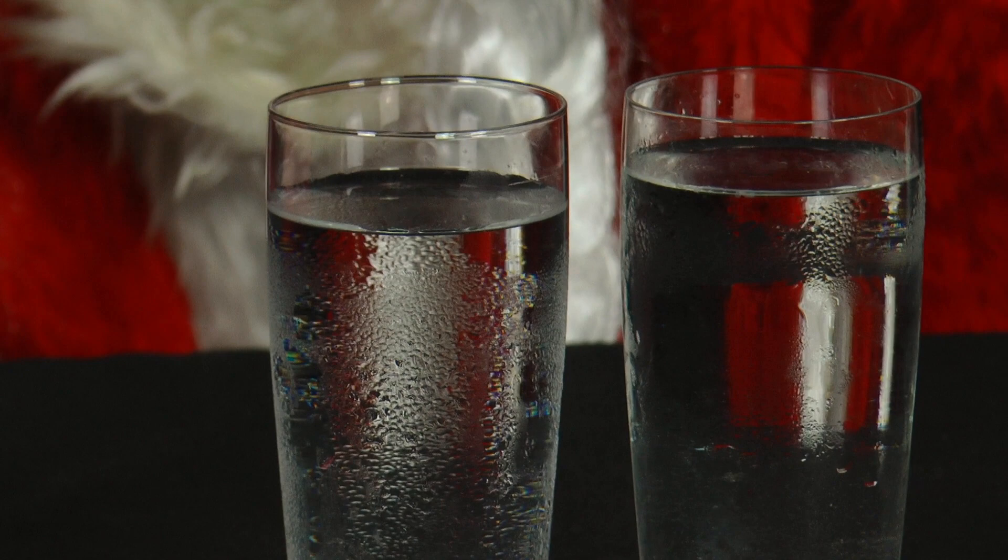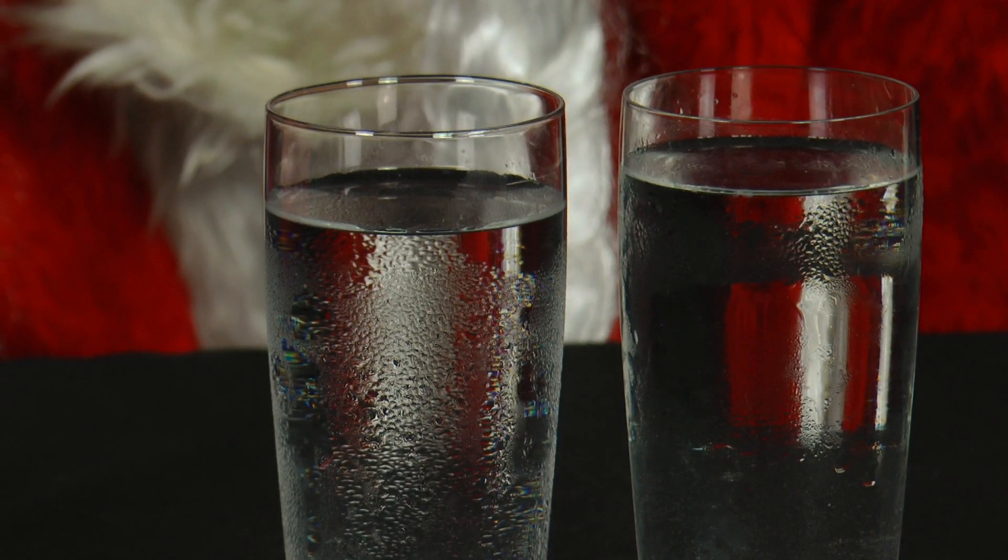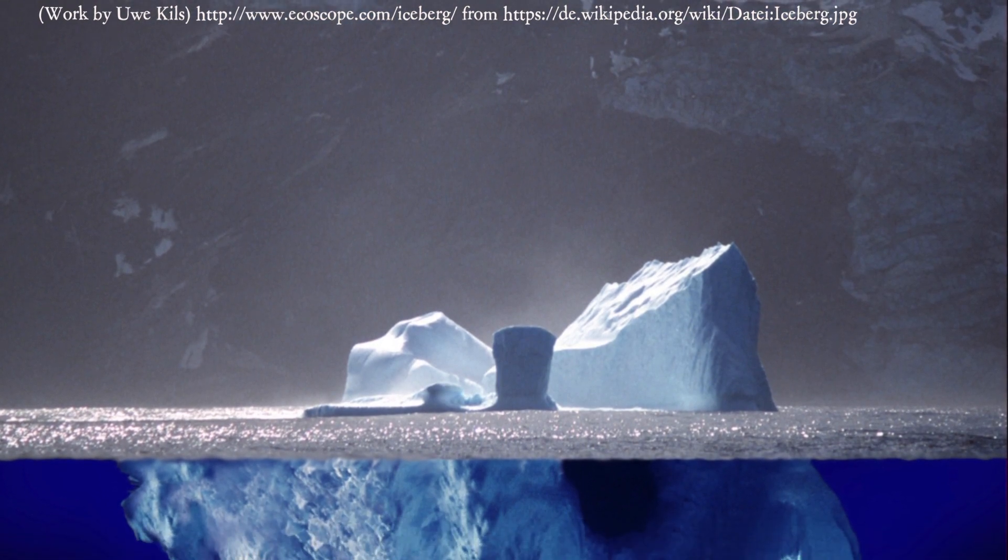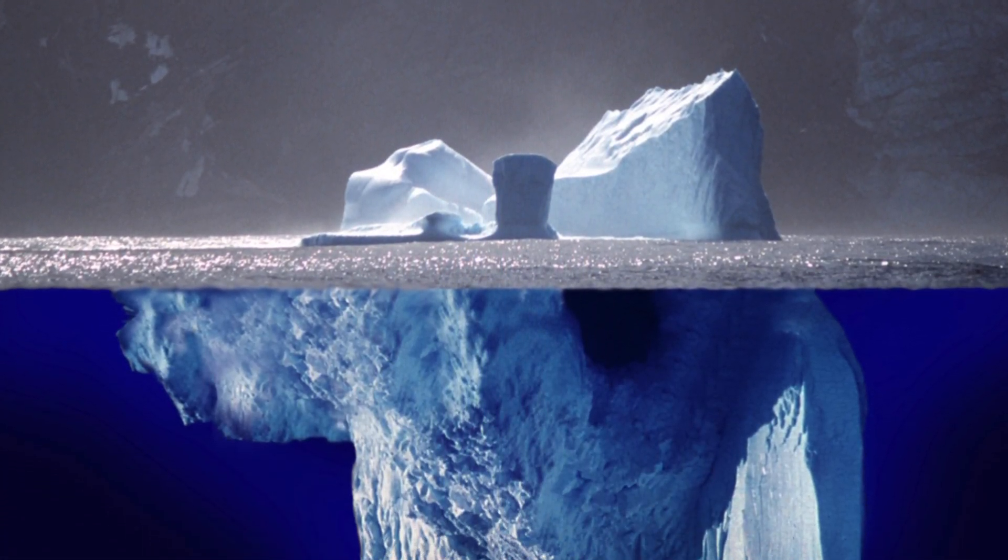Global warming melts ice that is currently still on the mainland in Greenland, on the Antarctic, or as glaciers in the mountains. This water will eventually reach the sea.